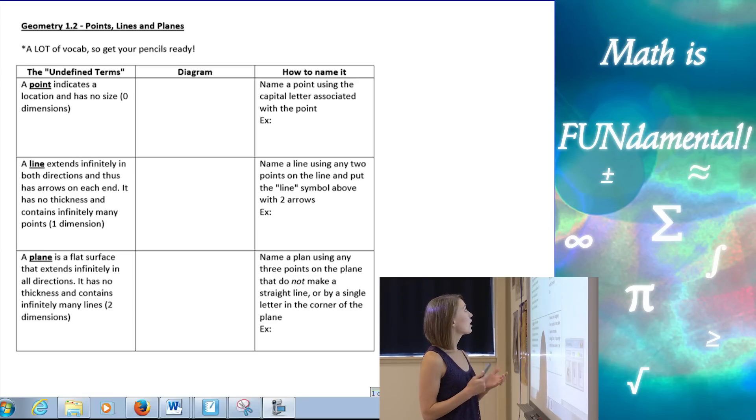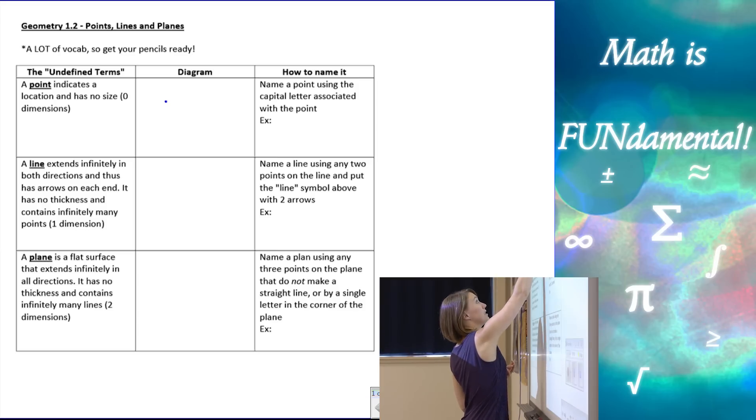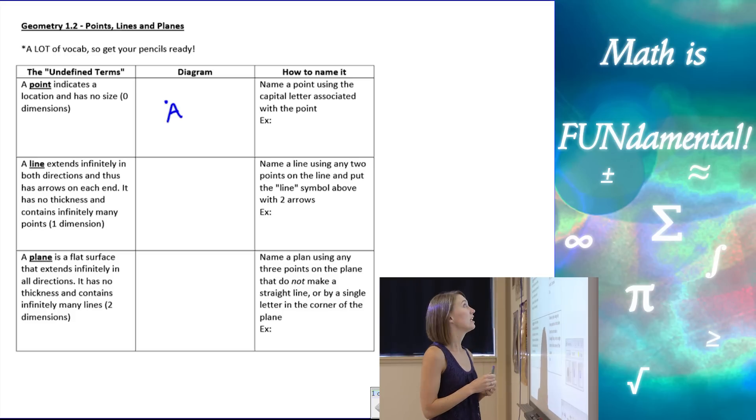So we're going to start with the vocab word point, and a point indicates a location that has absolutely no size, no dimension. It's weird to think about zero dimension, but that's what we have when we have a point. Diagram would be simply a point. You know what a point looks like. And it's going to have a letter next to it, and that letter is what we use to name the point.